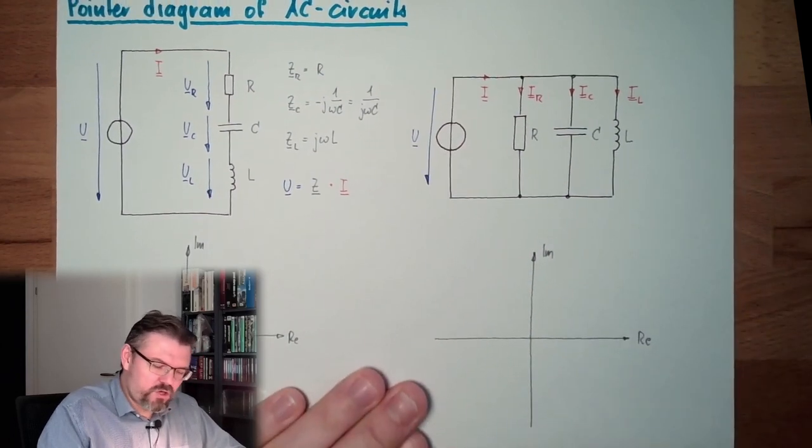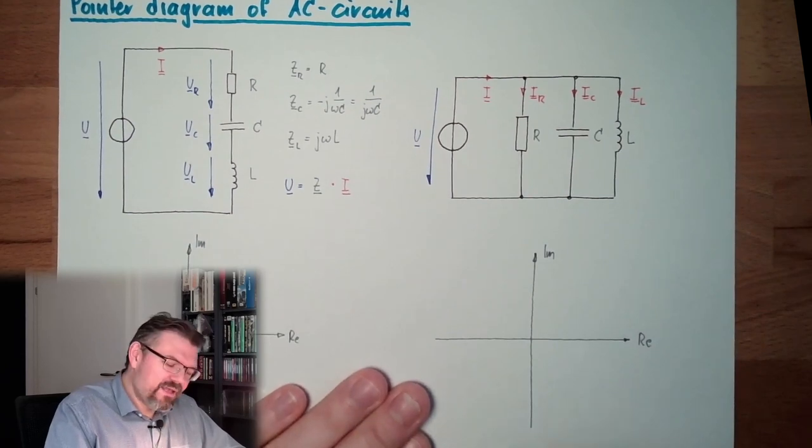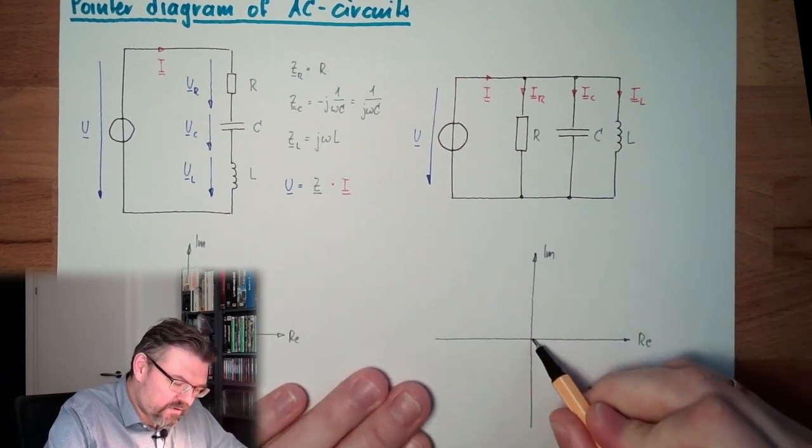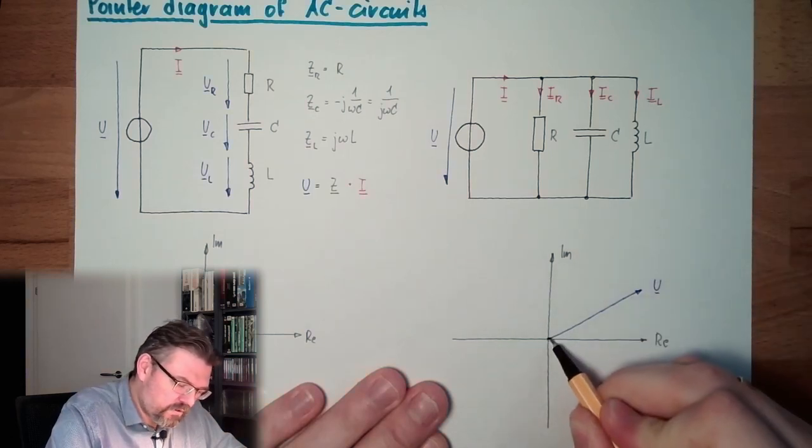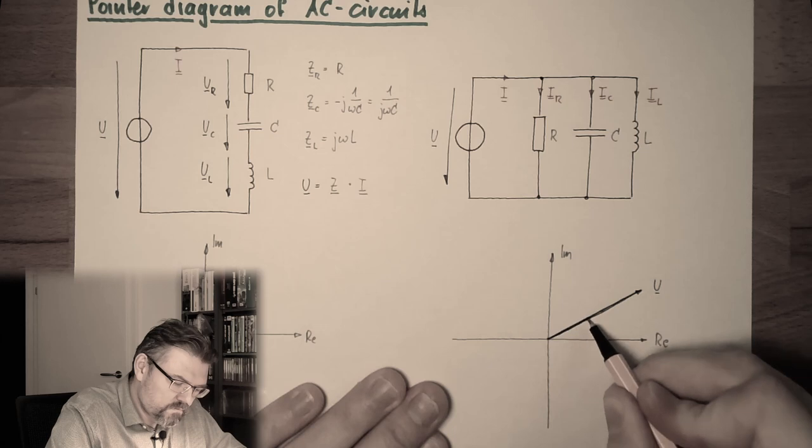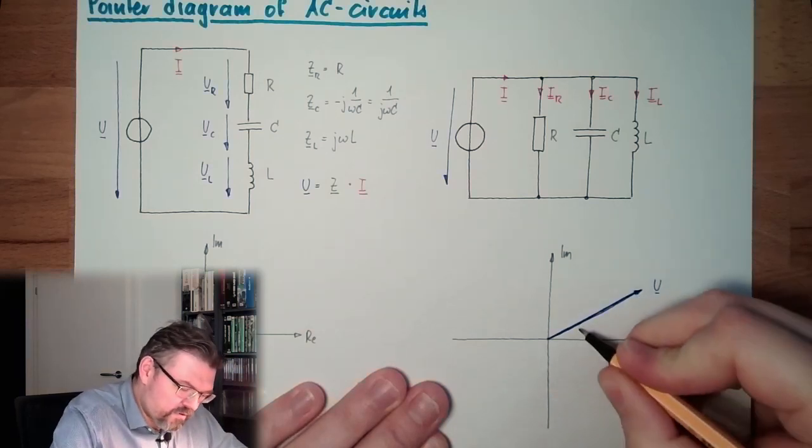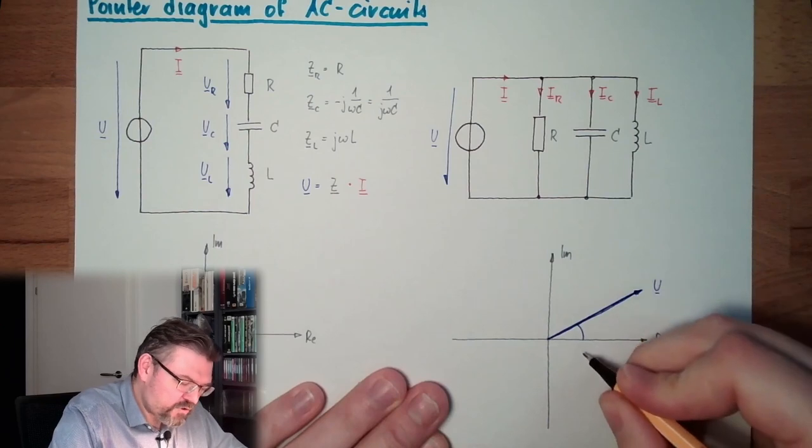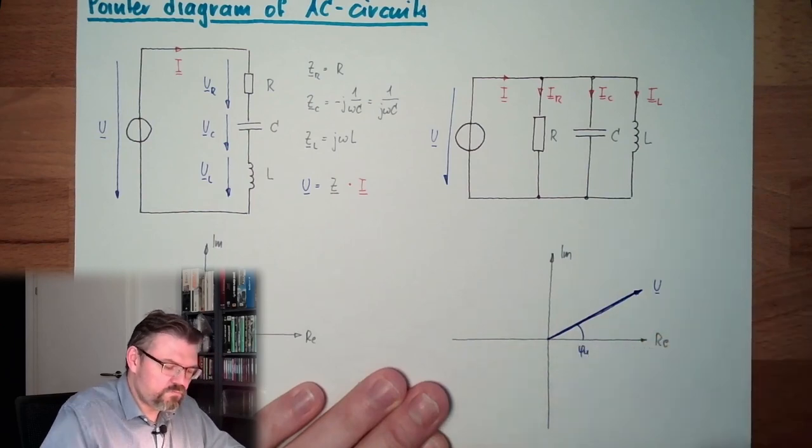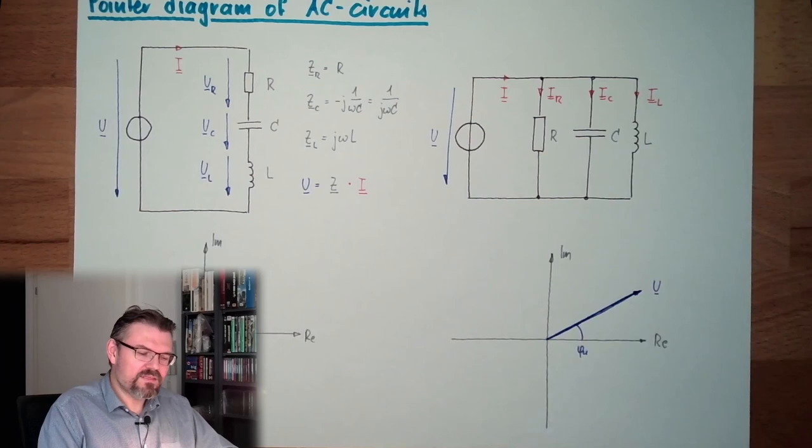And I now say, okay, the voltage U at a certain point in time does look like that. That's my U. We have a certain phase of my voltage, VU, zero phase. And that's it.